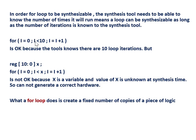Here, for i equal to 0, i less than 10, i equal to i plus 1 — this is synthesizable, because during compile time, the synthesis tool will know that the loop will run for only 10 iterations. But if it is written like this — let's say x is 10 to 0, and for i equal to 0, i less than x, i equal to i plus 1 — that is not okay, because x is a variable.